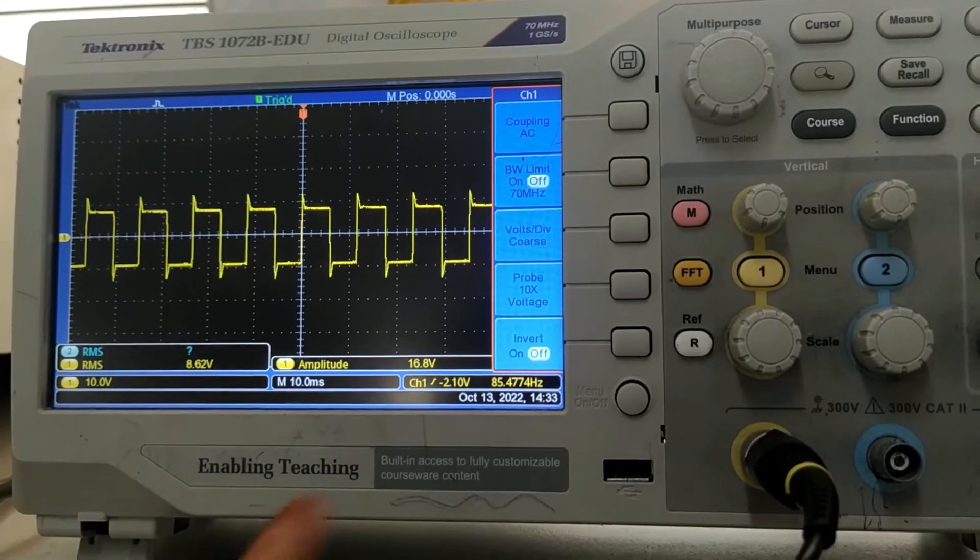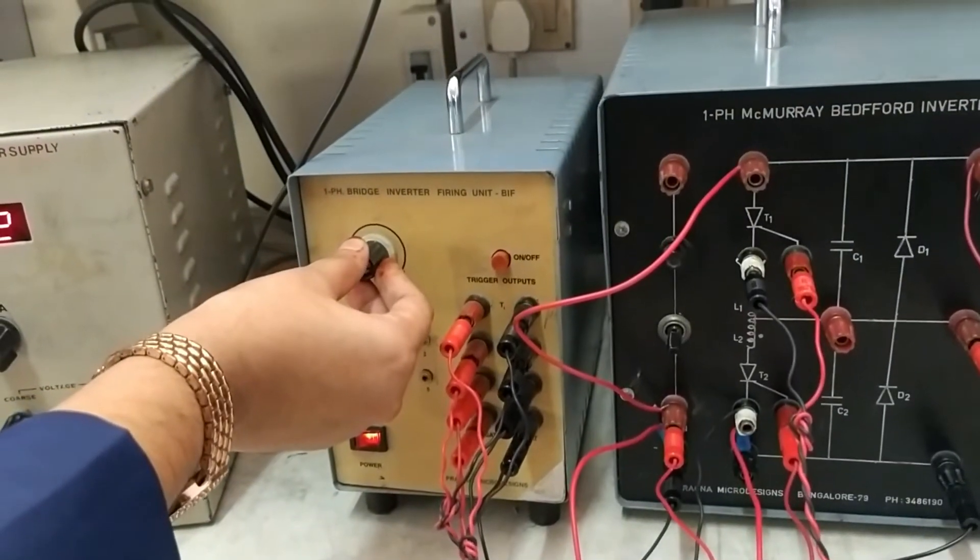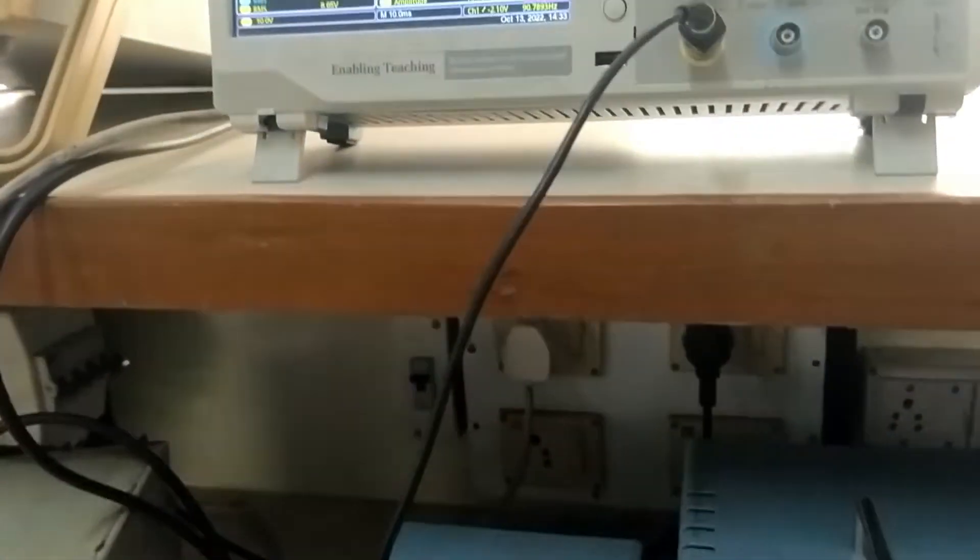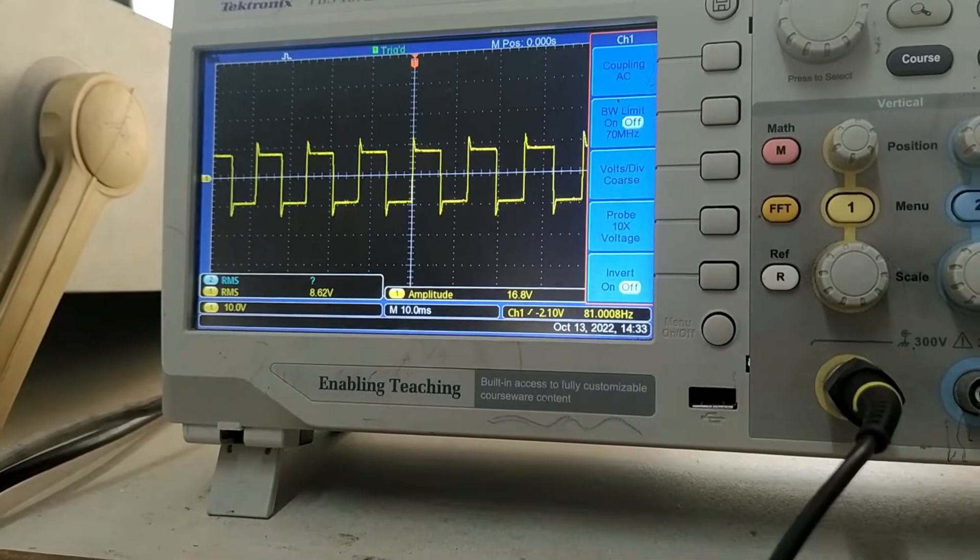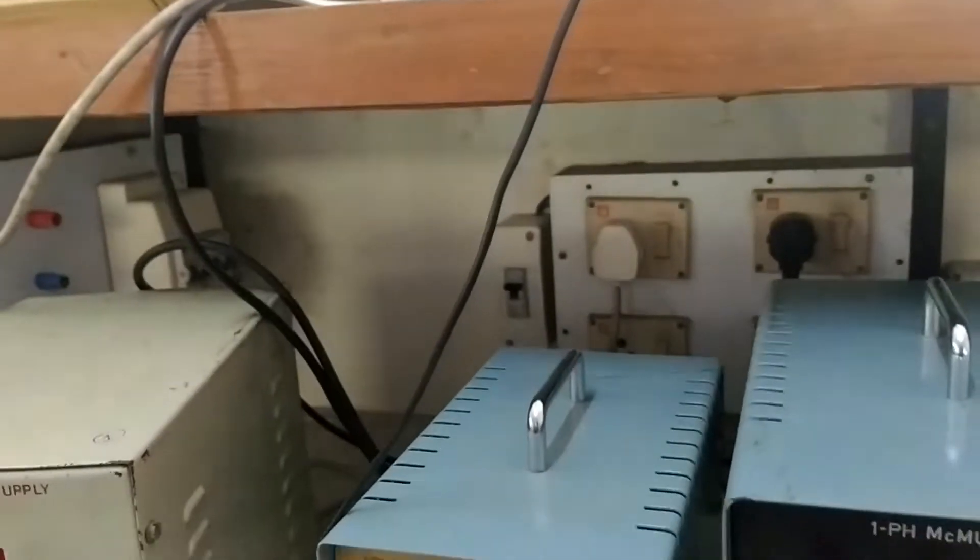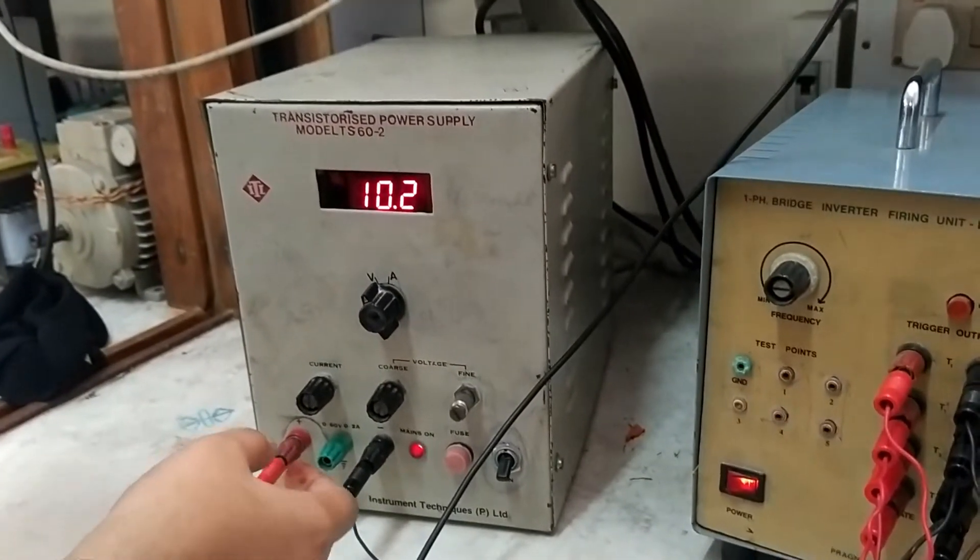And this frequency can be varied. You can see in the oscilloscope it is varying from this firing circuit. And its amplitude can also be varied from this regulated power supply.